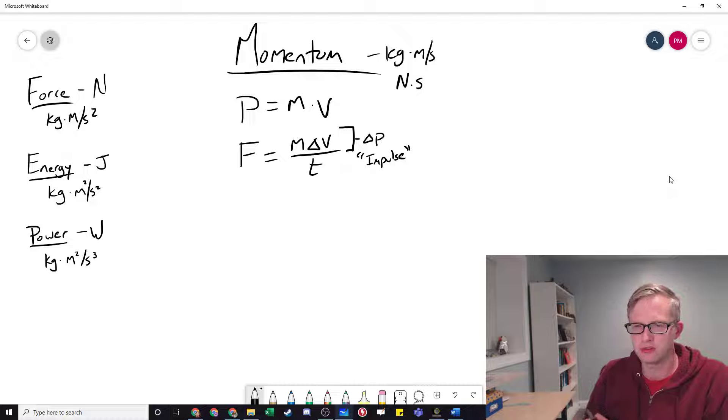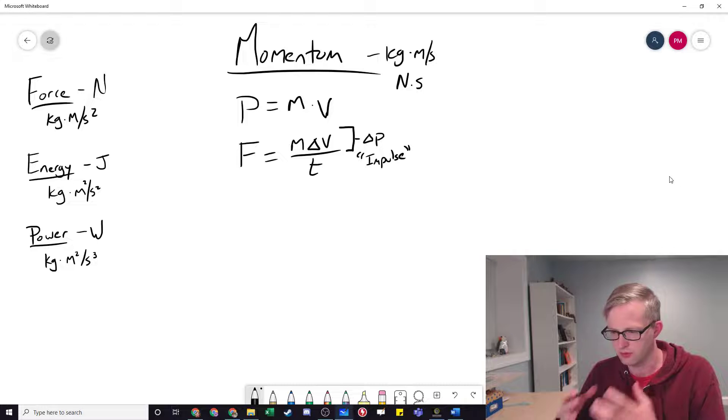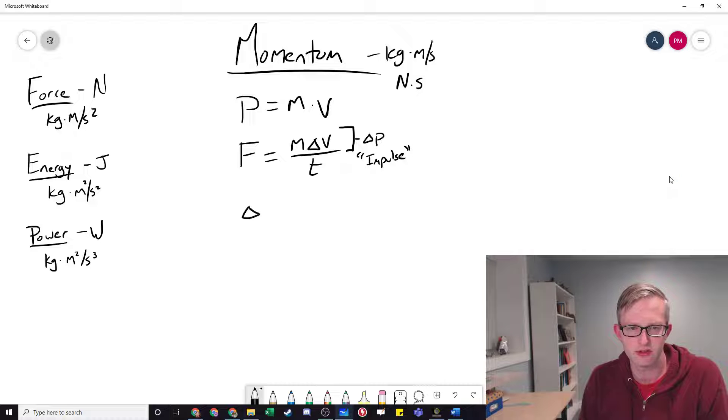When you experience an impulse, your motion has been changed by some force delivered to you over some period of time. In fact, if we rearrange this equation and solve for that impulse, we can see it's equal to force times time. I'm going to label this impulse.